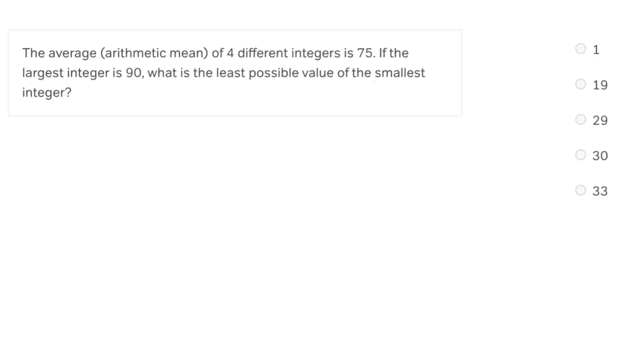Starting from the top, the average. Okay, so we know that we're working with an average here, so we know we're working with the average formula, which as a reminder is sum over number equals average. So the sum of the terms over the number of the terms equals the average of the terms.